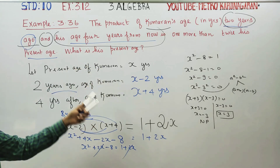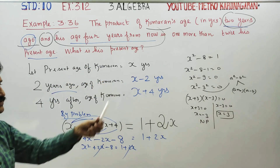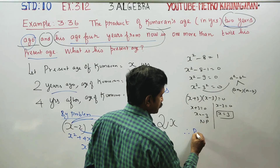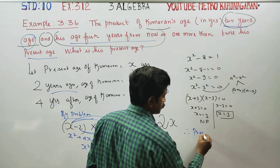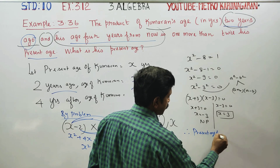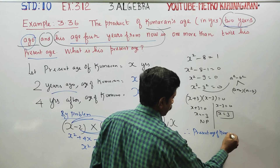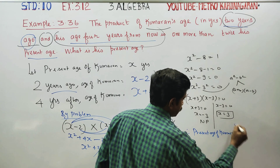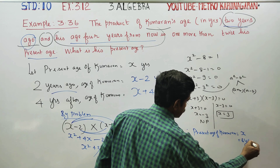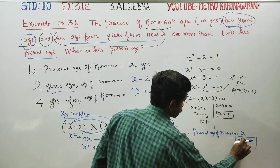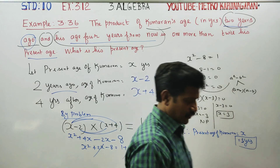What is the present age? The present age of Kumaran is x years. We found x equals 3. Therefore, the present age of Kumaran is 3 years. That is the final answer for this problem. Thank you.